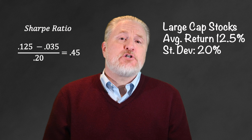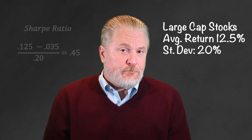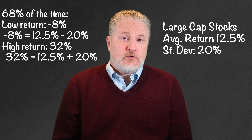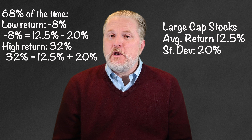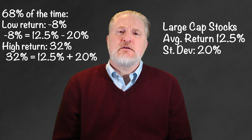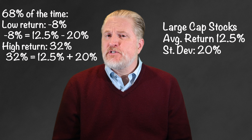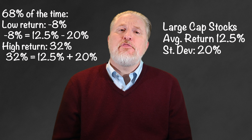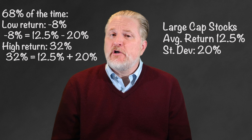Large cap U.S. stocks have averaged 12.5% annual returns with a 20% standard deviation, which converts to a Sharpe Ratio of 0.45. That means that about two-thirds of the time, the market should return 12% plus or minus 20%, making a reasonable range something like an 8% loss on the low end up to a 32% return on the high end.